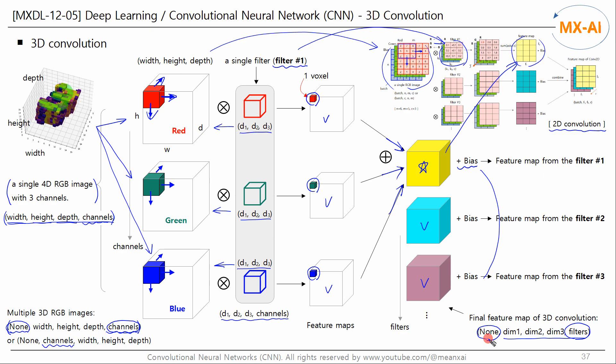This feature map can be fed into the next 3D convolutional layer or 3D pooling layer. A 3D pooling layer is just a 2D pooling layer with one more dimension. I will skip the explanation for this.